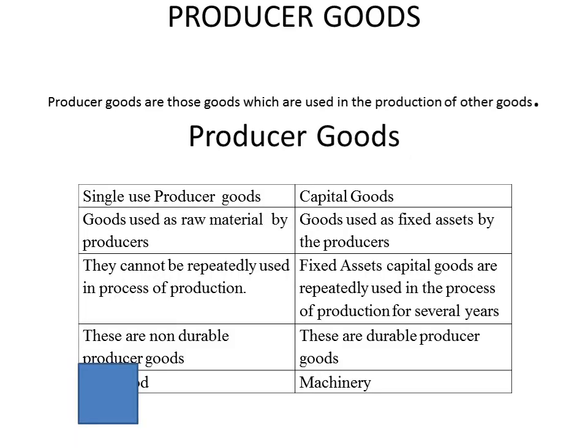Now there is a question: are all capital goods producer goods? No. Producer goods are those goods which are used in the production of other goods. Producer goods are of two types: single-use producer goods, or capital goods. Capital goods are a part of producer goods. So all capital goods are producer goods, but all producer goods cannot be capital goods, because producer goods may be intermediate goods.